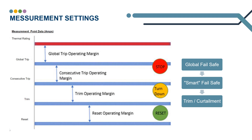We have another trip function set below the global trip called the consecutive trip. This is designed to avoid a global trip of the whole system and will trip the sites lowest in the stack, or most relevant to the constraint, in an effort to prevent that global trip. We don't want to trip generators, and that's why we have a trim margin set below the aforementioned trip values. If the measurement point goes above the trim threshold, curtailment is going to be sent to the generators in order of the LIFO stack. Generators will then scale back and in theory avoid any of the wider trips. Measurement points will release capacity once the recorded values go below the reset value.